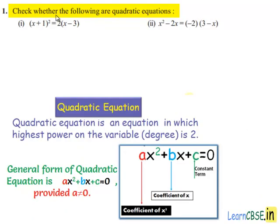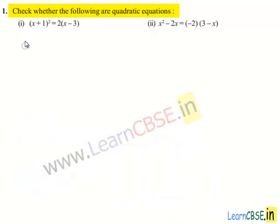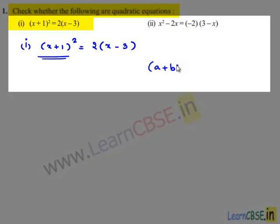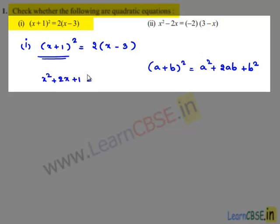Coming to the first problem: check whether the following are quadratic equations. The first bit given is (x + 1)² = 2(x - 3). On the left hand side we have (x + 1)². We know that (a + b)² = a² + 2ab + b², so we can write (x + 1)² as x² + 2x + 1.